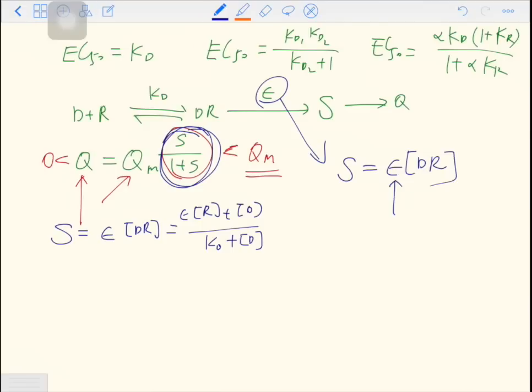And we define another term, it's called efficacy. There is no intrinsic in the name of the new term. And the E is defined as the intrinsic efficacy times RT. So what does this look like? This looks like the Qmax term in the Clark's model. Remember Qmax equals A times RT, and A is the intrinsic activity. So S can be written as E times D over Kd plus D.